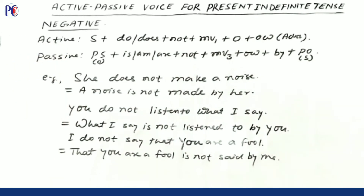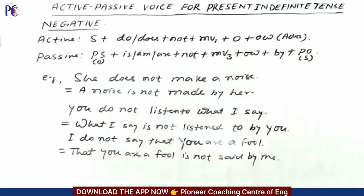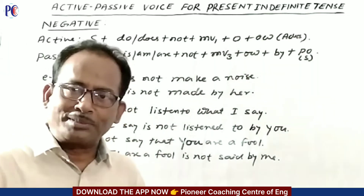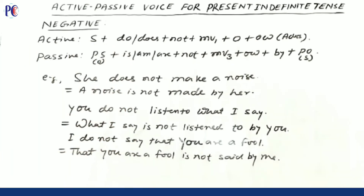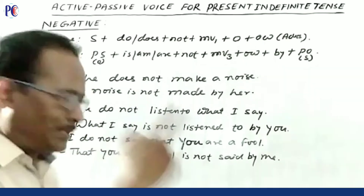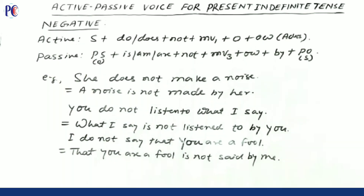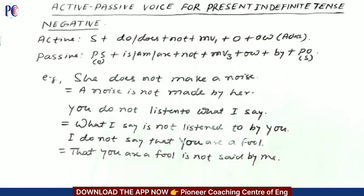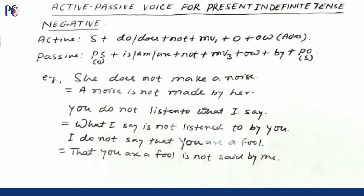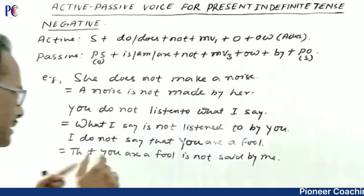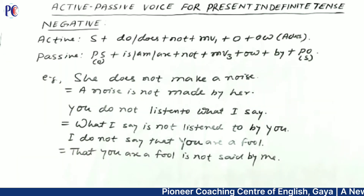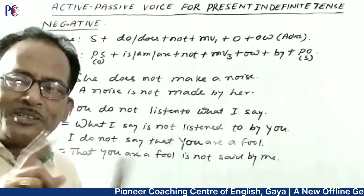Third example: 'I do not say that you are a fool.' The object is 'that you are a fool' — a clause. Move it to become the passive subject. 'That you are a fool' is a single clause, treated as third person singular. So: 'That you are a fool is not said by me.' Remember, it is very easy. If you pay attention, making active into passive is absolutely easy. Summary: 'She does not make a noise' → 'A noise is not made by her.' 'You do not listen to what I say' → 'What I say is not listened to by you.' 'I do not say that you are a fool' → 'That you are a fool is not said by me.'